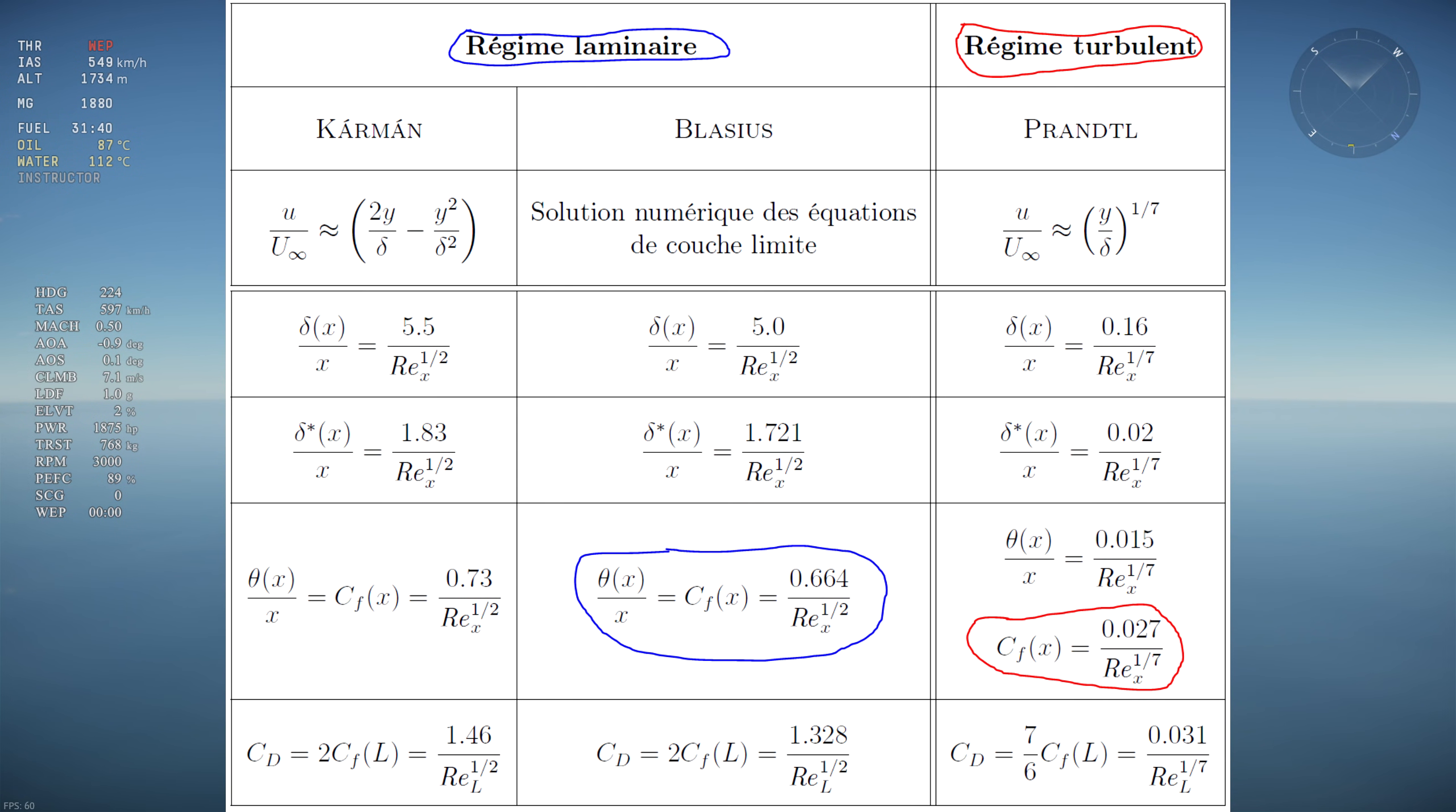Now, with the equations circling blue and red for laminar and turbulent flow respectively, we can calculate the skin friction drag for a laminar flow airfoil and compare it to a typical airfoil by approximating the airfoil as a flat plate.